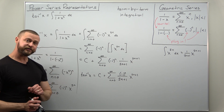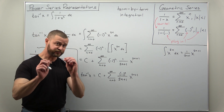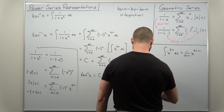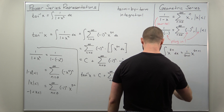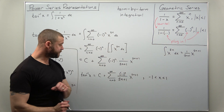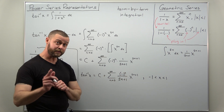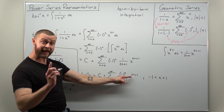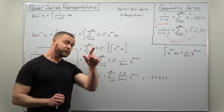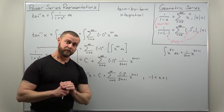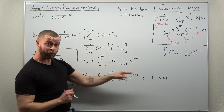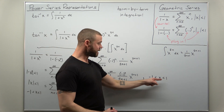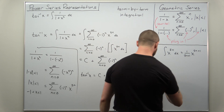Now we're going to solve for the value of c by picking an appropriate value. Make sure the values of x you plug in are in your interval of convergence — this converges for values of x between negative 1 and 1. But you can actually do better: take this power series and check both endpoints x equals 1 and x equals negative 1. Since x to an even power is always positive, you'll find the infinite series converges at both endpoints, so you can modify the interval to include both endpoints.